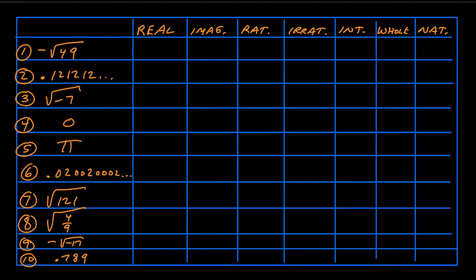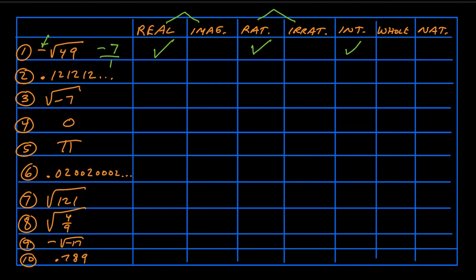Let's go through these now. For number one, we've got negative square root of 49. Is that real or imaginary? Well, there's a negative on the outside, but there's not a negative underneath the square root — so this is a real number. If we simplify it, 7 times 7 is 49, so the square root of 49 is 7, and the negative on the outside makes it negative 7. Negative 7 can be written as negative 7 over 1, a ratio of an integer over an integer — so it's rational. Negative 7 is also an integer, but it's not a whole number or a natural number since those require zero or positive numbers.